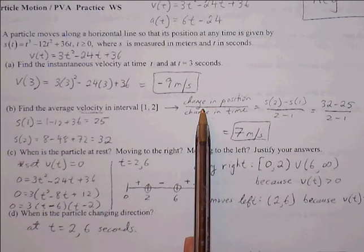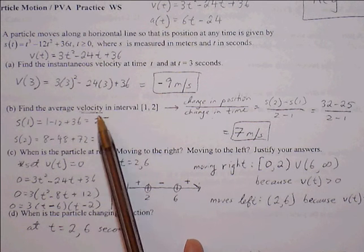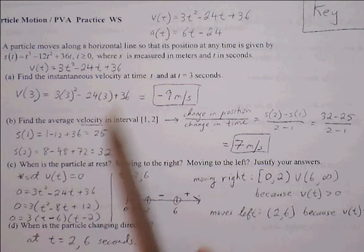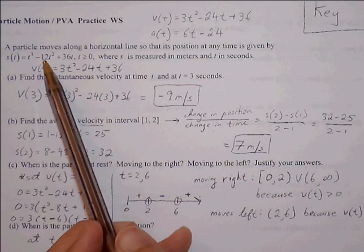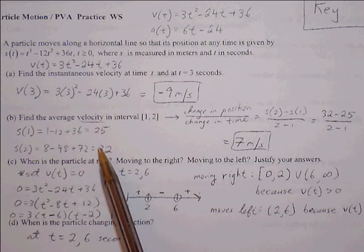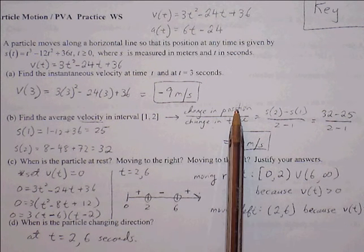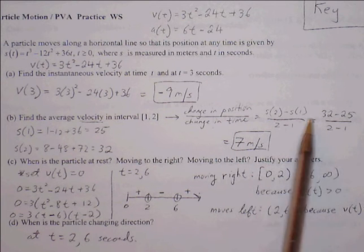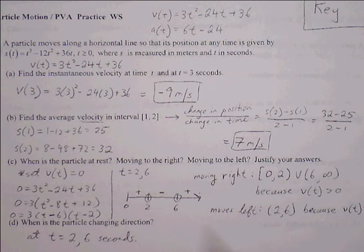To get change in position over change in time, we find the position at 1 second and at 2 seconds by plugging into the position function. Then we compute s of 2 minus s of 1 over 2 minus 1. So 32 minus 25 is 7, divided by 1 is still 7.